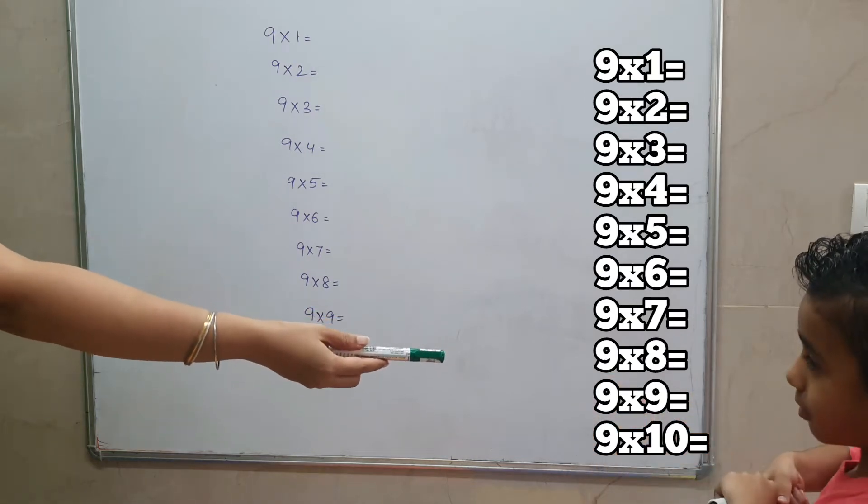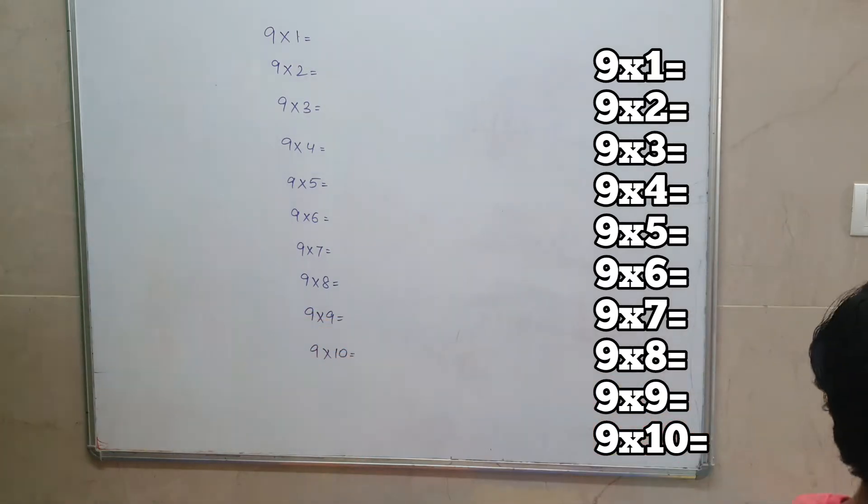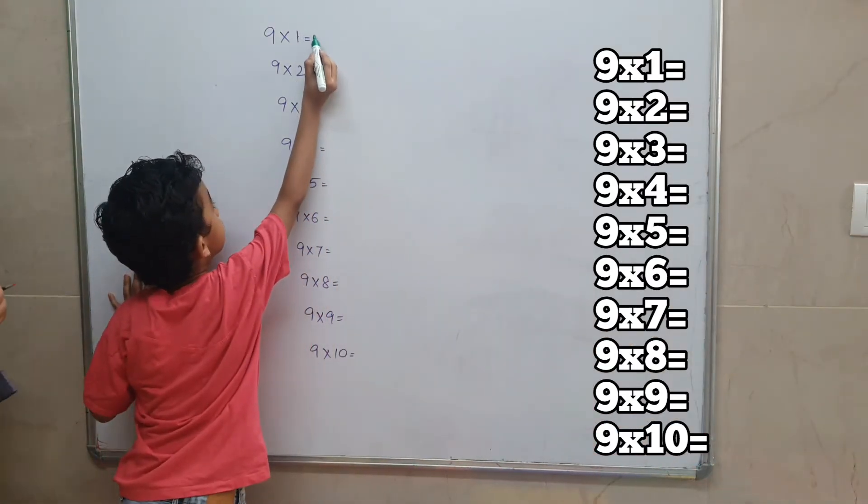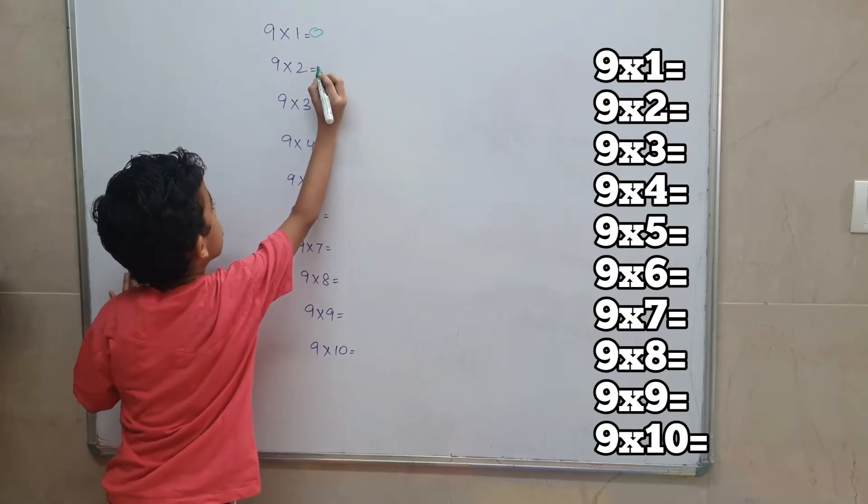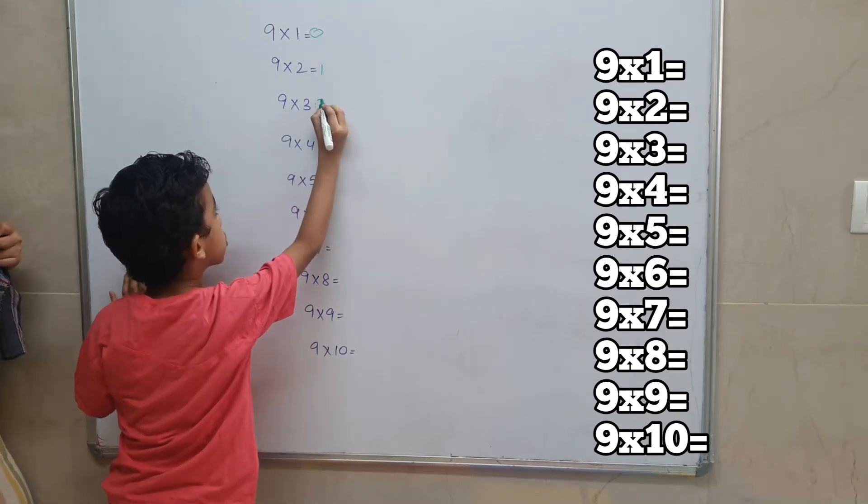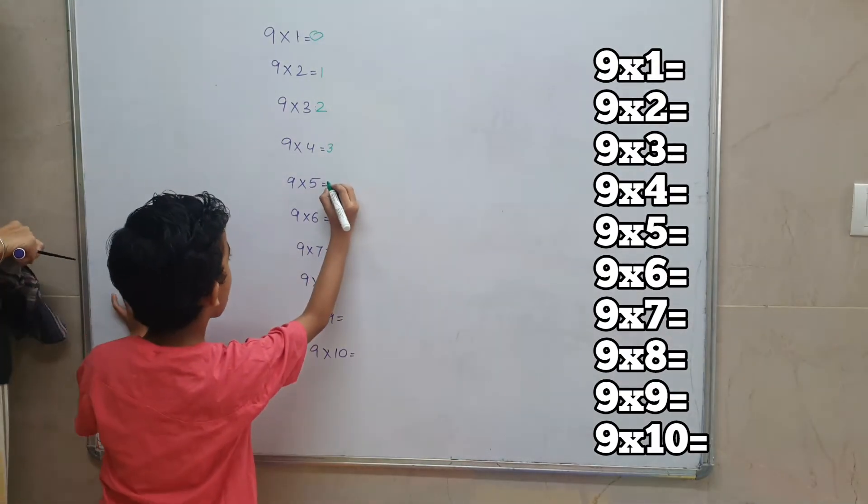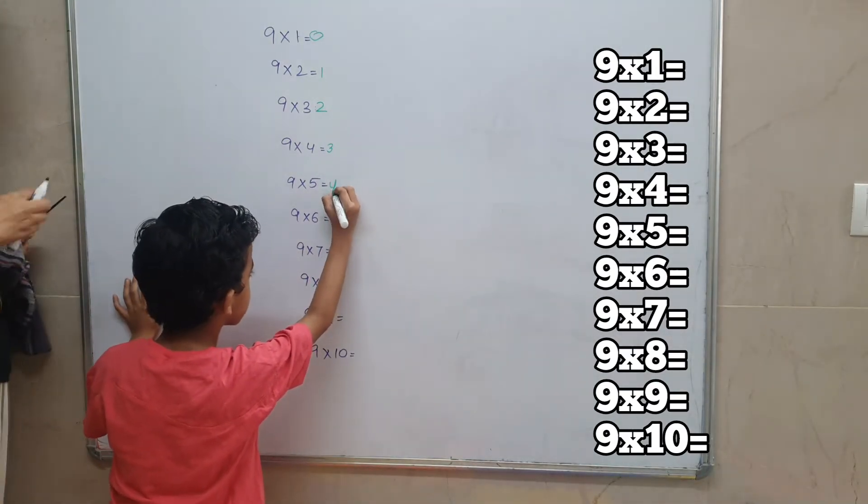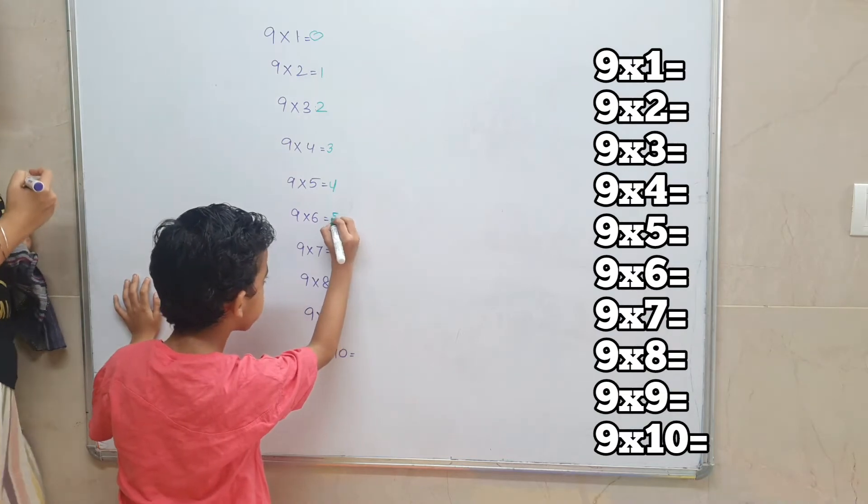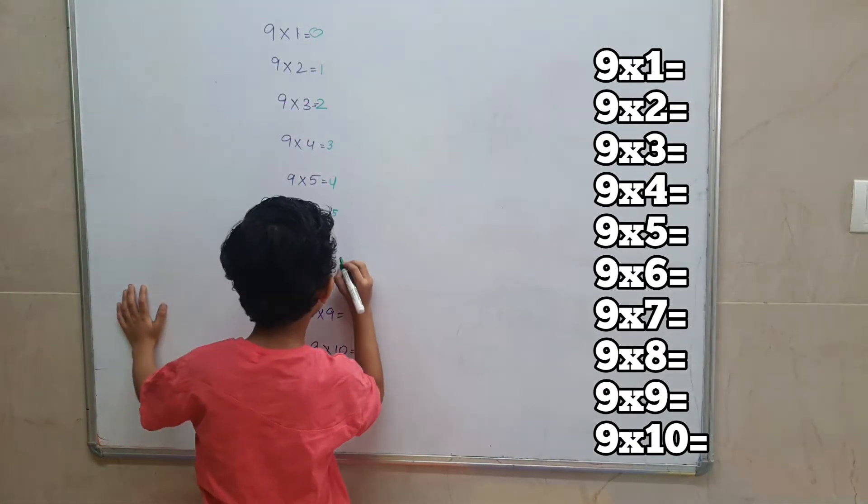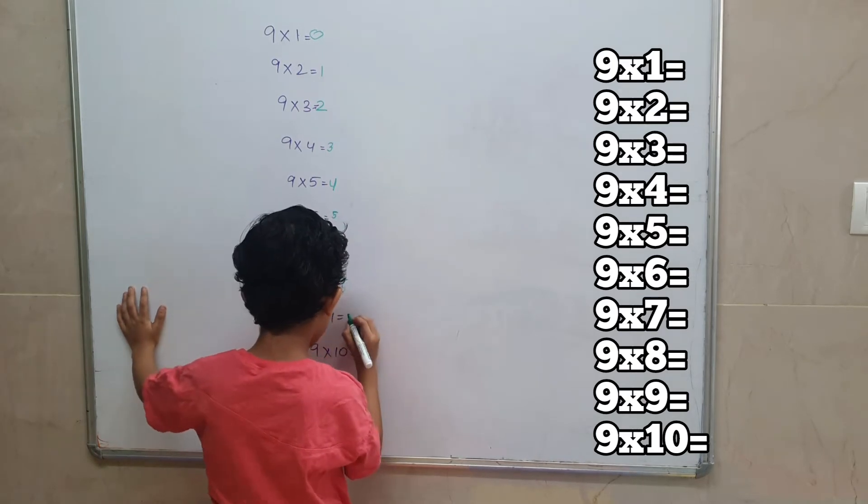Please start with zero, one, okay, two, very good, three, okay, four, okay, five, okay, six, okay, seven, okay, eight, and nine.